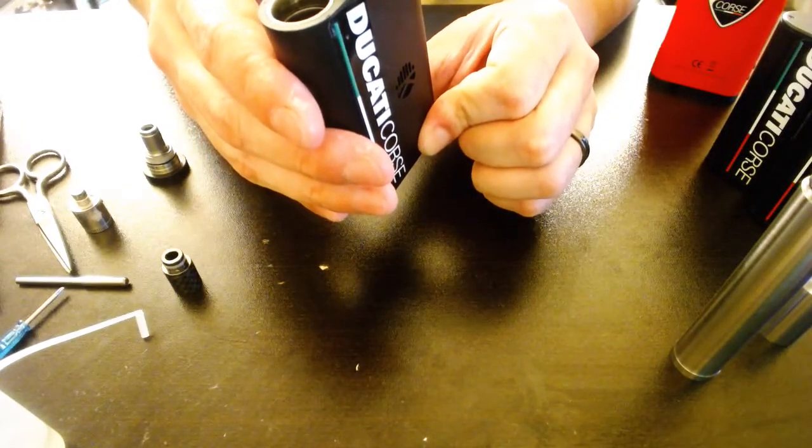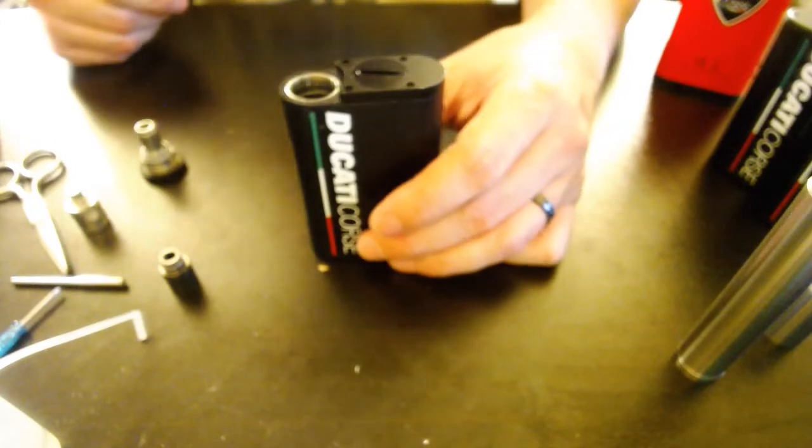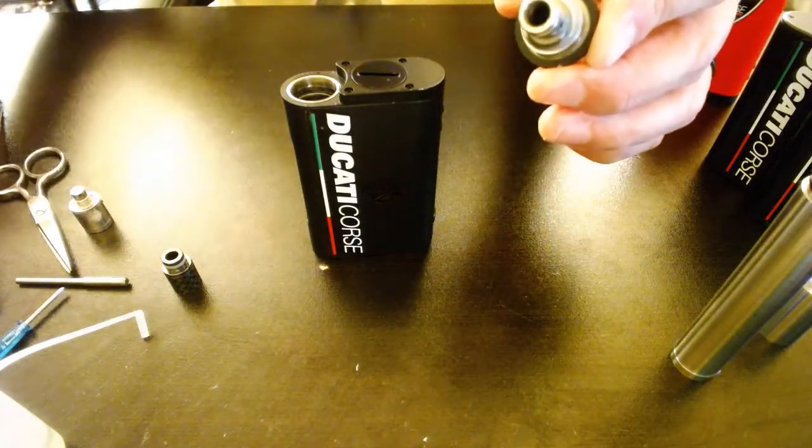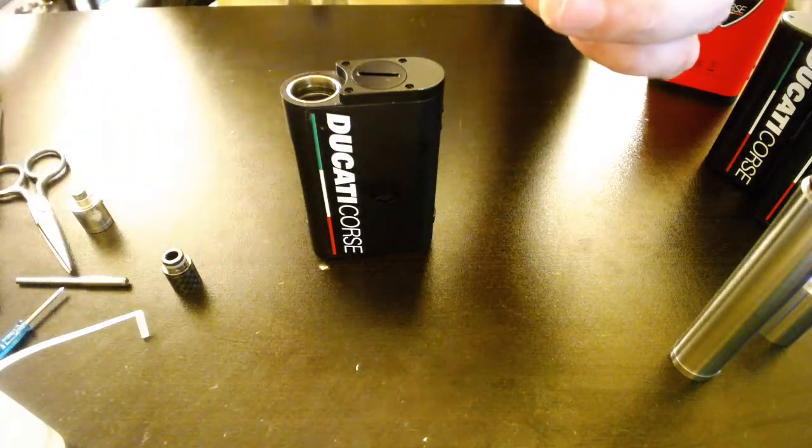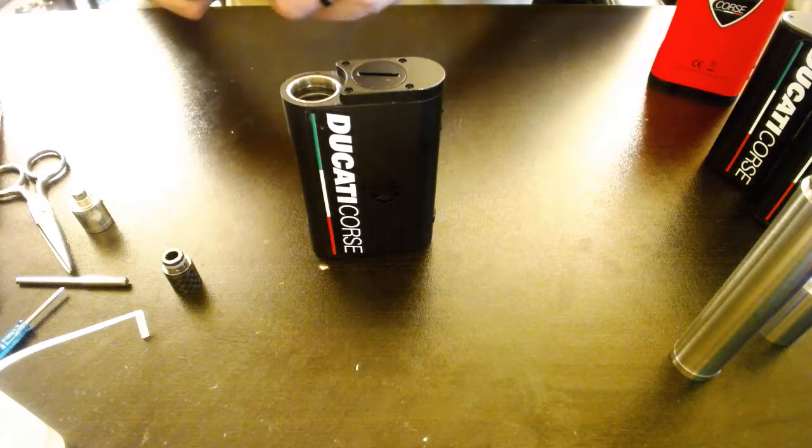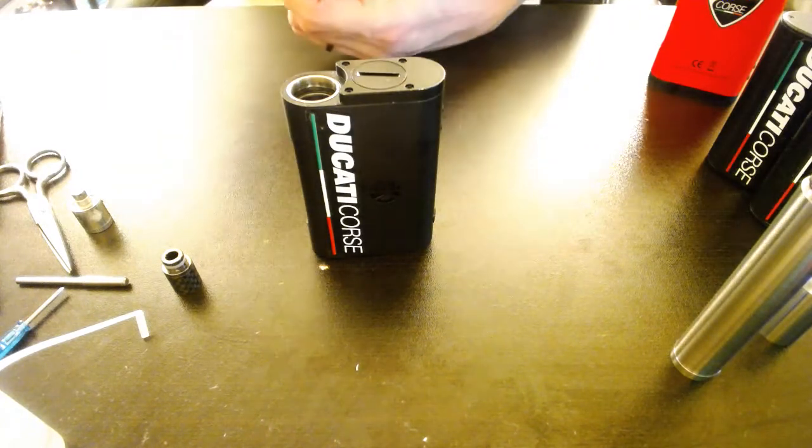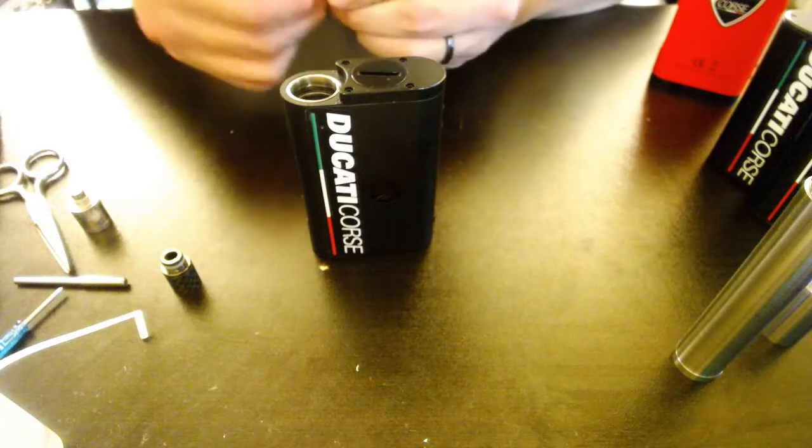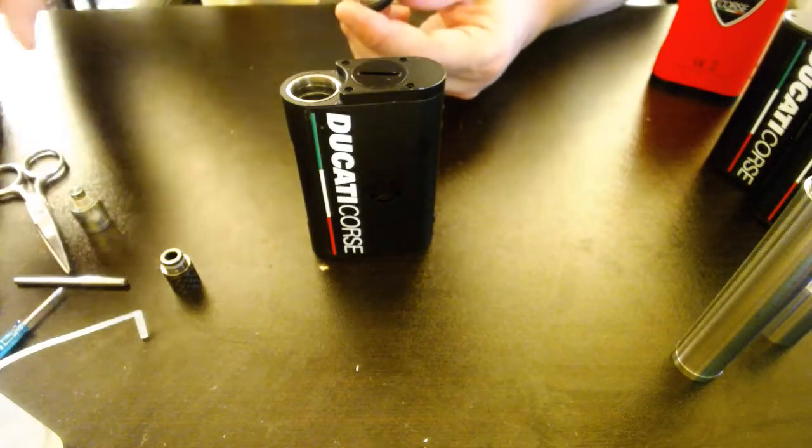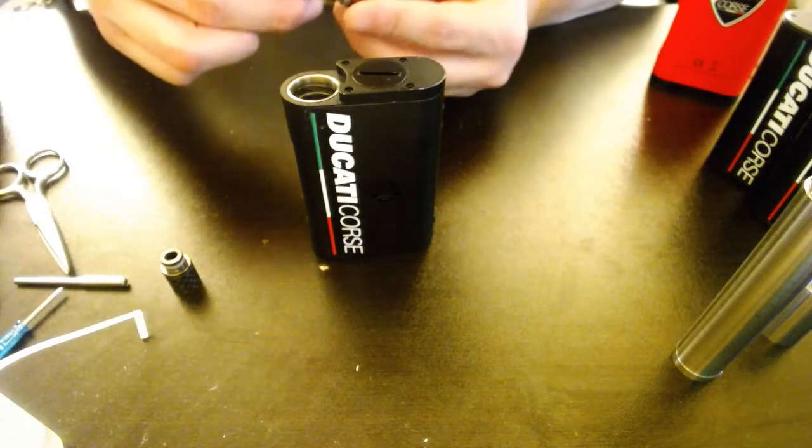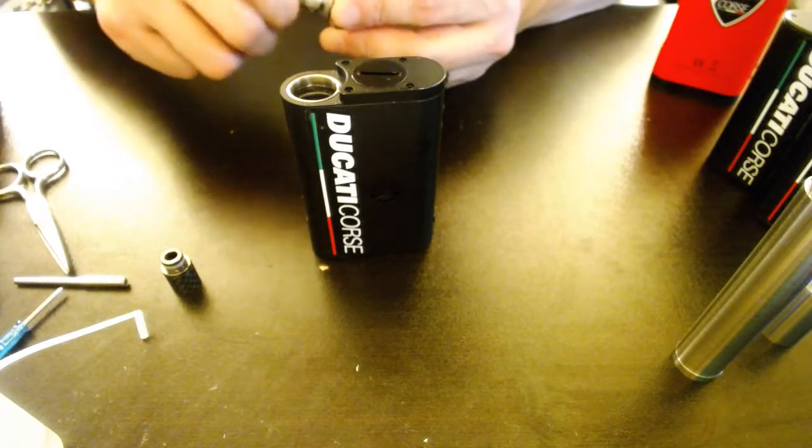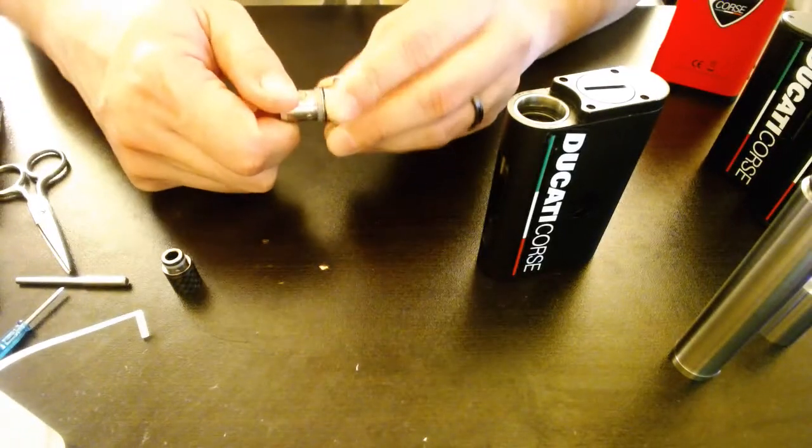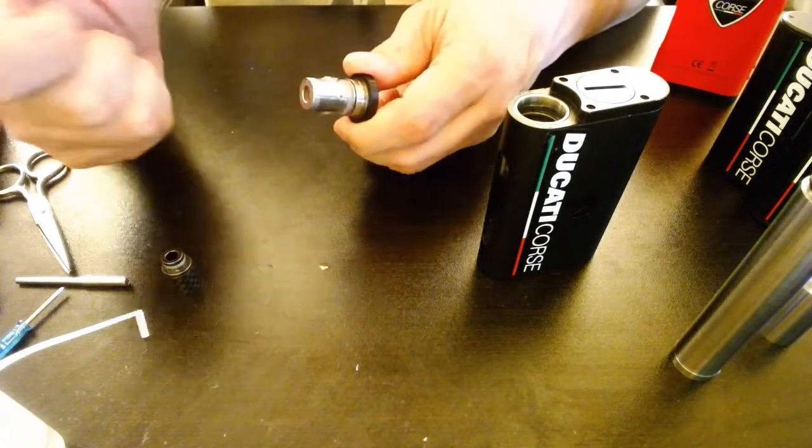That is a nickel SSOCC, which as far as nickel coils go, is pretty much as good as it gets, but some people can, some people can't. I can very definitely distinctively taste nickel wire. I'll hide that. Okay. So screw the RBA deck into the base. And then let's just top off the tank while I add it.